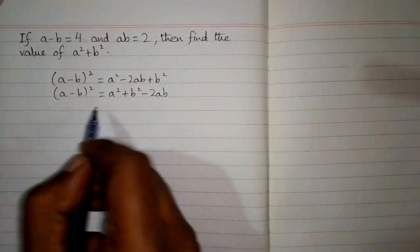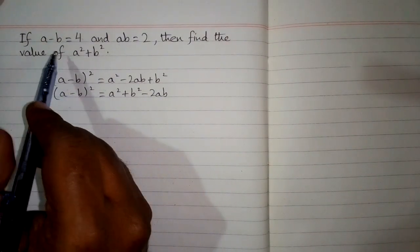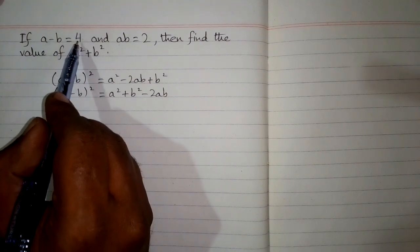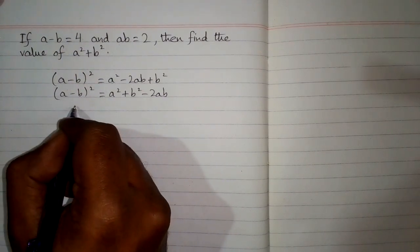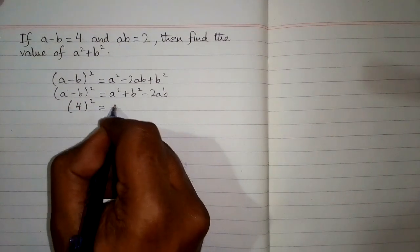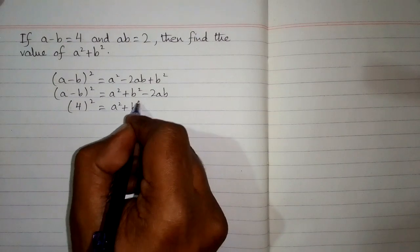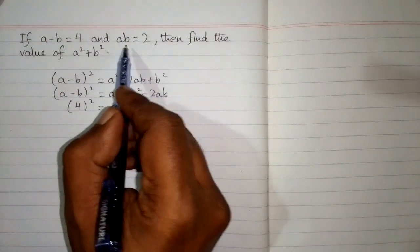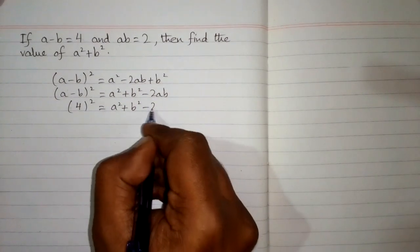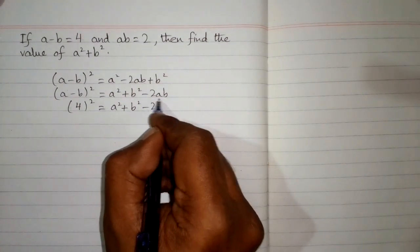Now we can put the value of a minus b which is given in the question. We have a minus b is equal to 4, so we put 4 in place of a minus b. And then we put the value of ab which is given in the question. The value of ab is 2, so we will put 2 in place of this ab.